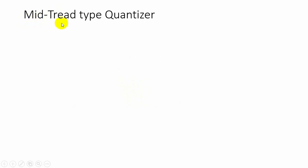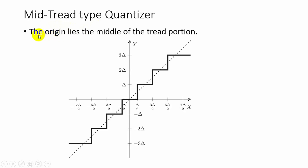The terminology mid-tread or mid-rise is based on what happens in the region around the value 0. In mid-tread type, the origin lies in the middle of the tread of the staircase-like graph. For example, if delta equals 1 and the input is 0.5, the output can be 0 or 1. If the input is 0.8, the output is 1. If the input is 0.3, the output is 0.